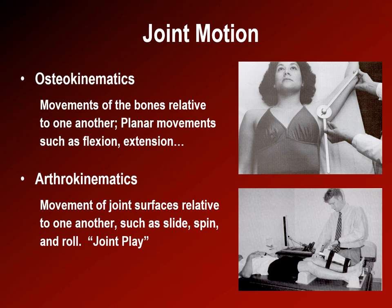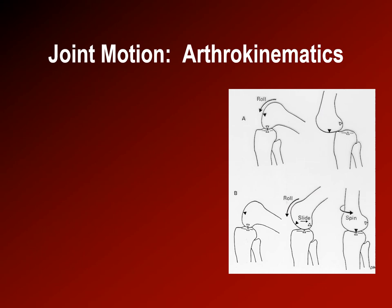To think about arthrokinematics, imagine the knee flexing and extending. The diagram shows the femur rolling forward in order to extend the knee. However, if the articular surface of the femur did not simultaneously rock backward, it would roll forward right off the front edge of the knee.